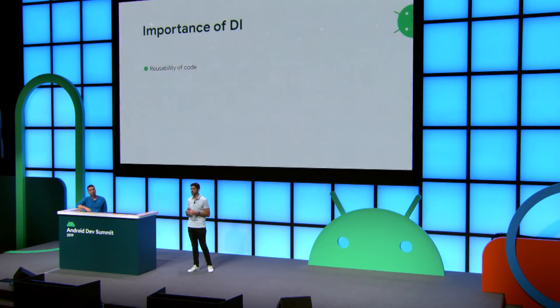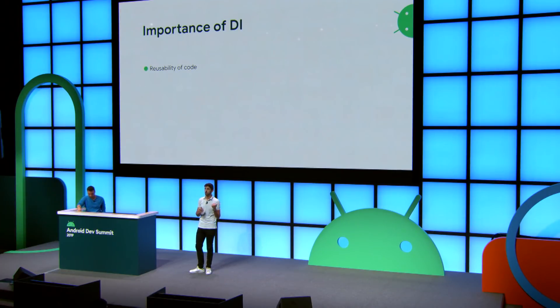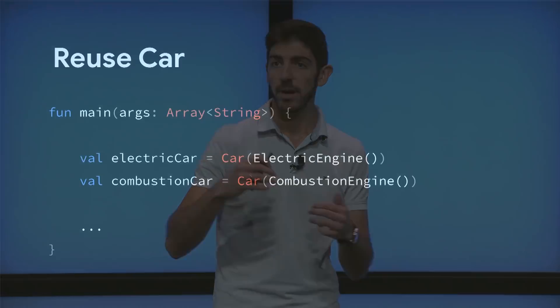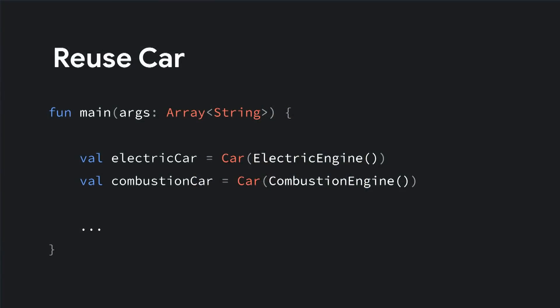Why is dependency injection that important? First, it helps you reusing code and decoupling dependencies. Classes no longer control how the dependencies are created, and therefore they can work with any configuration. Here we can see that by passing in different implementations of engine, we can reuse car — we don't have to do anything else, we don't have to change the source code.